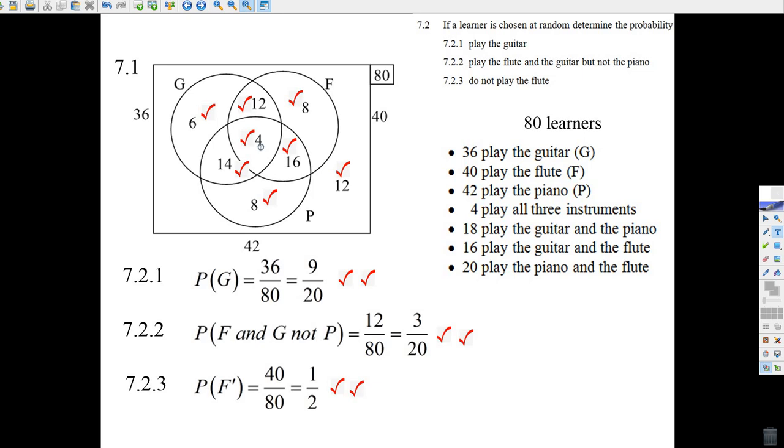It says 16 people play the guitar and the flute. 16 minus four makes it 12. 12 people must play the guitar and flute, but not all three. Altogether, this guitar and flute slice here makes up 16. And 20 people play the piano and flute. That means 20 minus four is 16 people play the piano and flute, but not the guitar.